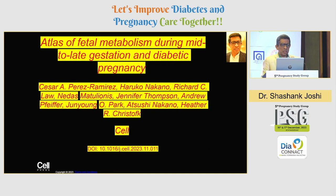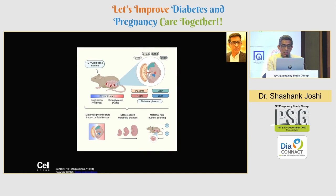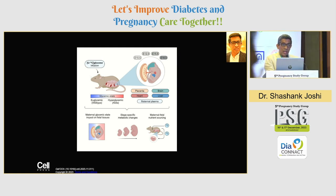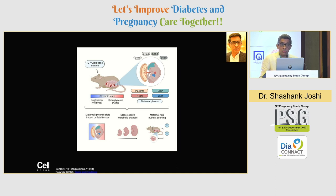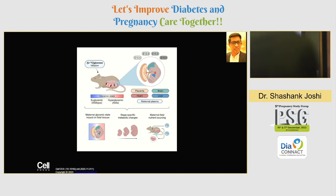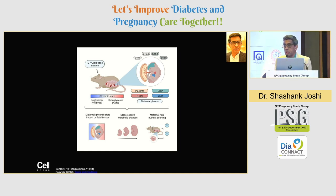I found this article a couple of days ago — a November Cell paper which is a fetal atlas. This fetal atlas covers fetal metabolism during mid and late gestation and diabetic pregnancy. What they looked at is the maternal glycemic state and its impact on fetal tissues, stage-specific metabolic changes, and maternal and fetal nutrient sourcing. They had animal models of this using glucose infusion in mice.